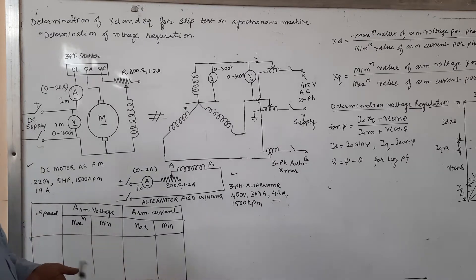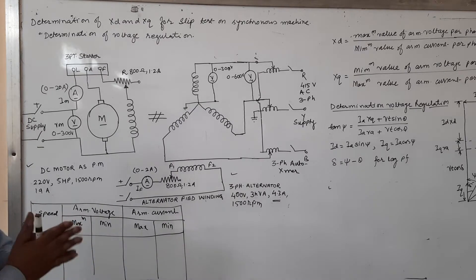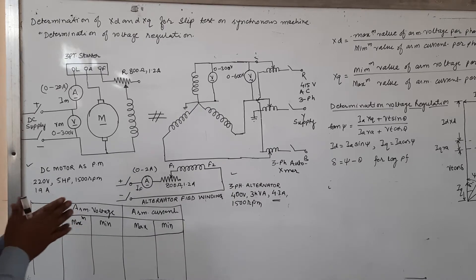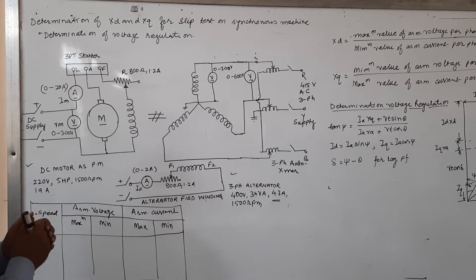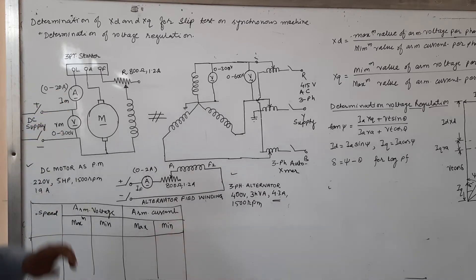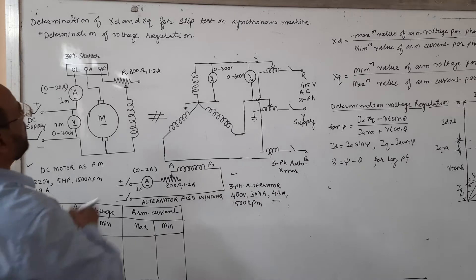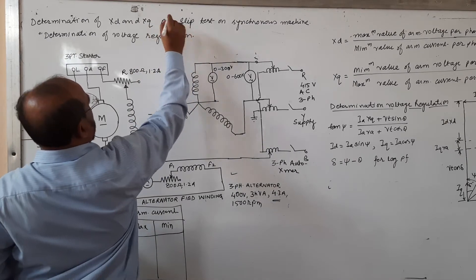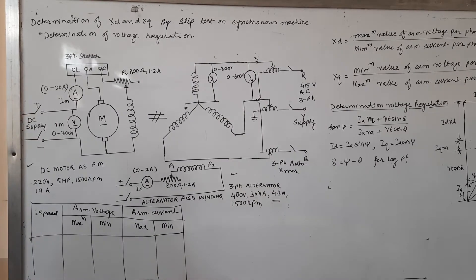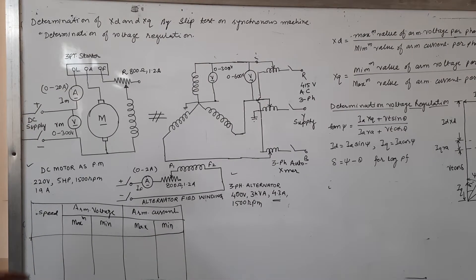We will perform the test called Determination of Voltage Regulation of a Salient Pole Synchronous Machine. First is the Determination of Direct Axis and Quadrature Axis Reactance by slip test on a Salient Pole Synchronous Machine, and Determination of Voltage Regulation.